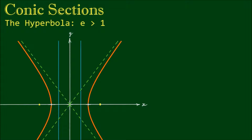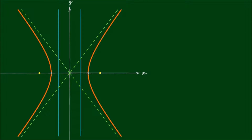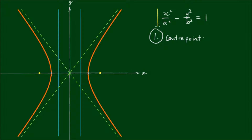Previously we've derived the standard equation for the hyperbola. In this video let's describe the main features that will allow us to sketch them. The curve shown in orange is a typical hyperbola constructed from the standard equation x squared over a squared minus y squared over b squared equals 1. The first main feature is the center point. All hyperbolas of the standard form have their center at the origin, and we'll discuss equations for hyperbolas not centered about the origin in a different video.